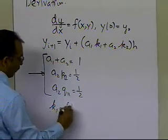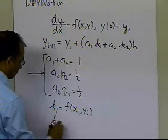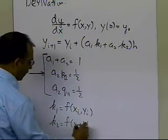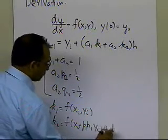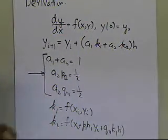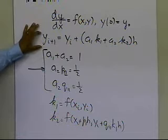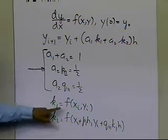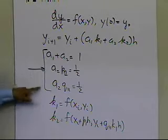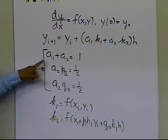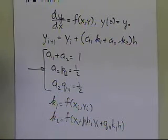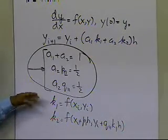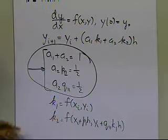In the formula, k1 is equal to the value of the function at x_i, y_i, and k2 is equal to the value of the function at x_i plus p1 times h, y_i plus q11 times k1 times h. You need to satisfy these three equations to find what values of a1, a2, p1, and q11 to use. In this segment, we want to figure out how they obtained these three equations to write the general form for Runge and Kutta's second-order method.